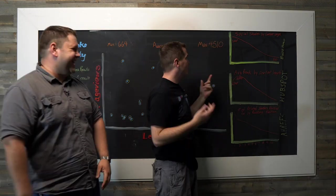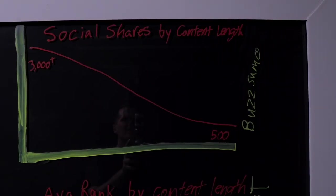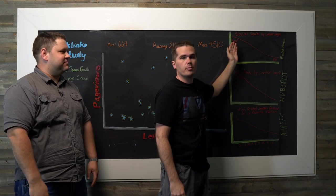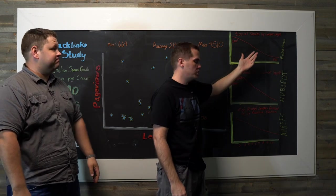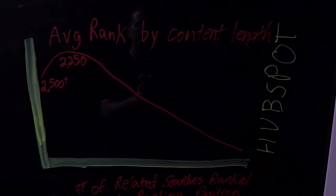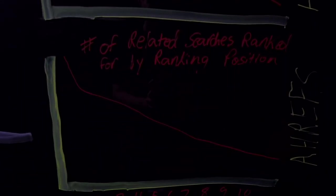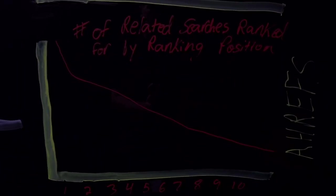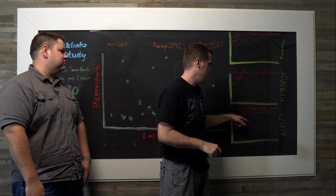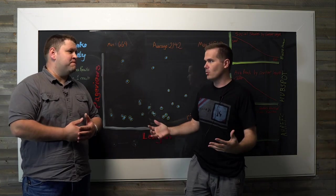And over here, we kind of see the same thing. So Buzzsumo checked the number of social shares that content gets according to the length, and a longer blog post is more likely to be shared. HubSpot looked at the average ranking position in Google, kind of found the same thing, found about 2,500 words was the top. And then this is the number of related searches a single article could rank for by content length. And again, the higher the length is, the better the post is.